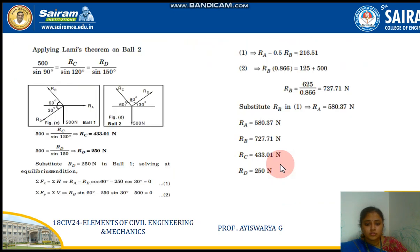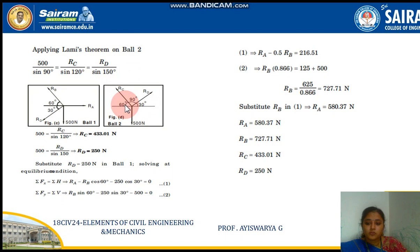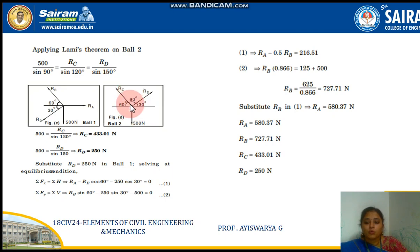Applying Lami's theorem to ball 2: in ball 2, the three forces are 500 Newton, R_D, and R_C. The angle between them: 90 degrees between one pair, 30 and 60 degrees for the others. So: 500 / sin(90°) = R_C / sin(90° + 30°) = R_D / sin(90° + 60°). This gives us the values of R_C and R_D.